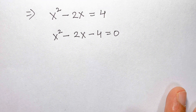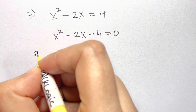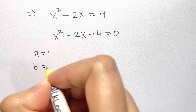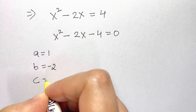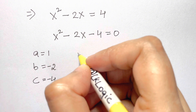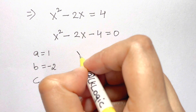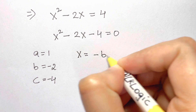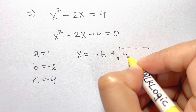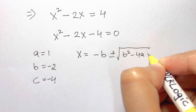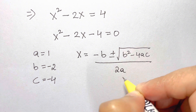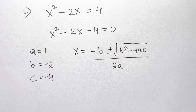This is in the form of ax² + bx + c, so we have a = 1, b = −2, c = −4. We're going to use the quadratic formula: x equals negative b plus or minus the square root of b² minus 4ac, all over 2a.